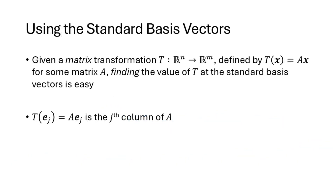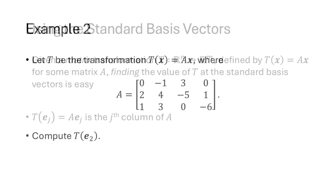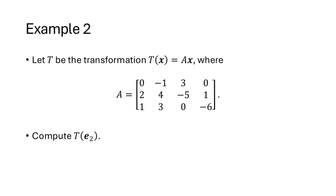Now if we're given a matrix transformation t(x) = Ax, we can find the value of t at the standard basis vectors pretty easily. t(ej) equals A times ej, and when you multiply A times one of those standard basis vectors, A times ej works out to be the j-th column of A. Let's see this in action.